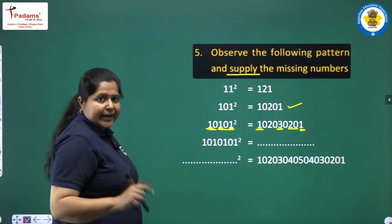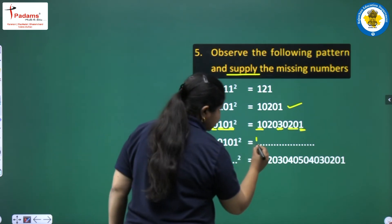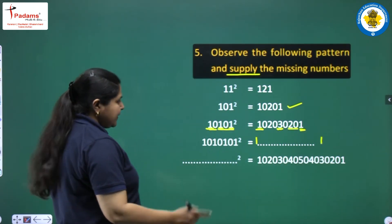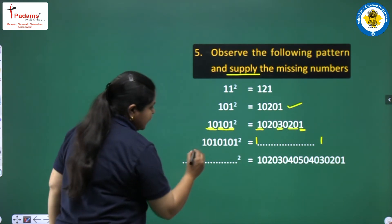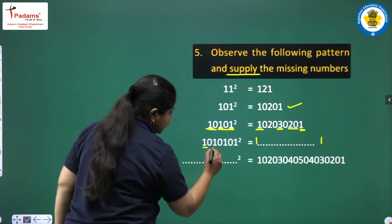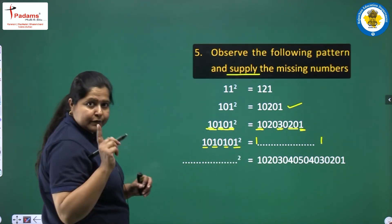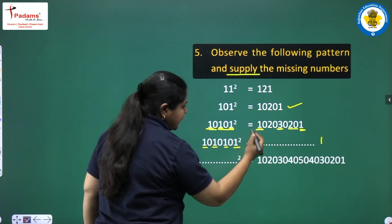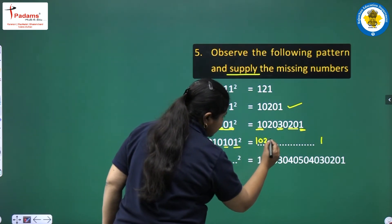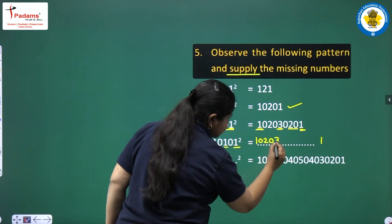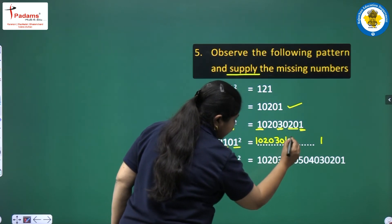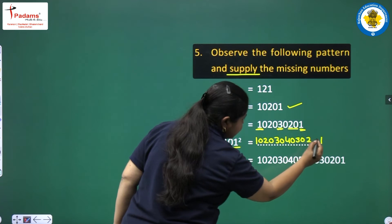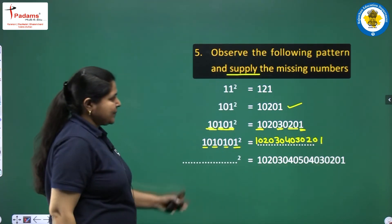For the next number with four 1s, we will have 1 at both endpoints. How many 1s? 1, 2, 3, 4 — four ones. So in the center we go up to 4: increasing as 10, 20, 30, 40, then decreasing 30, 20, and then 1 at the end. Isn't it interesting?